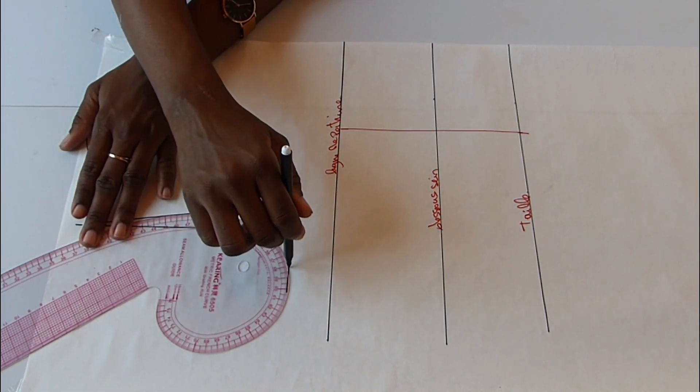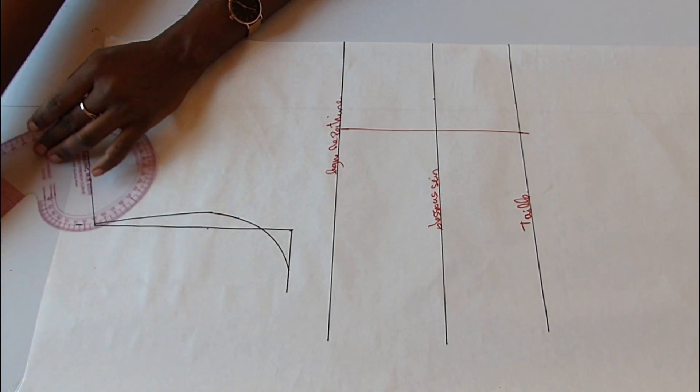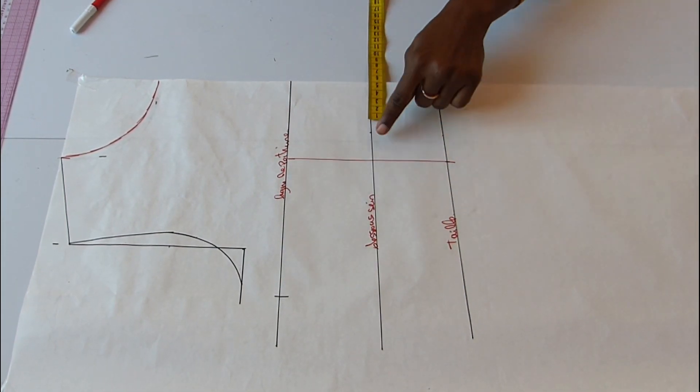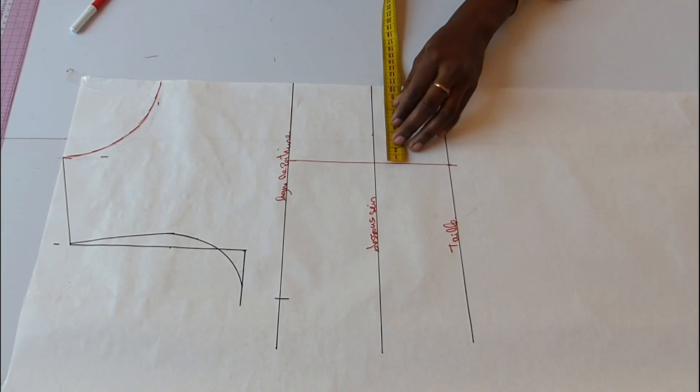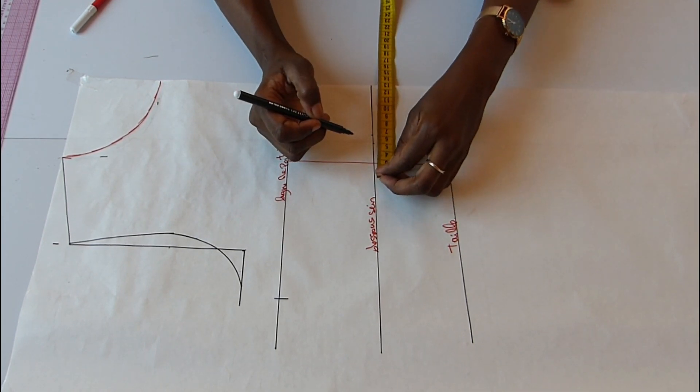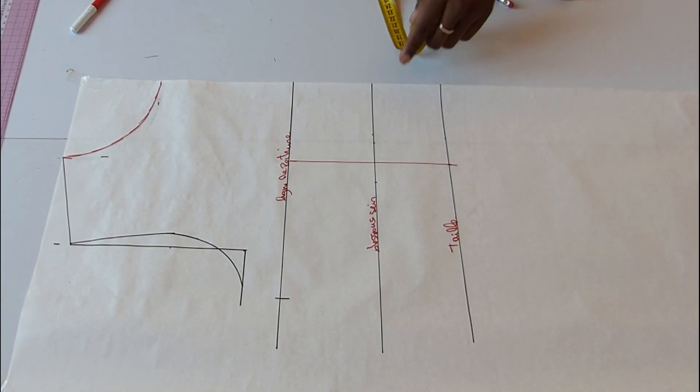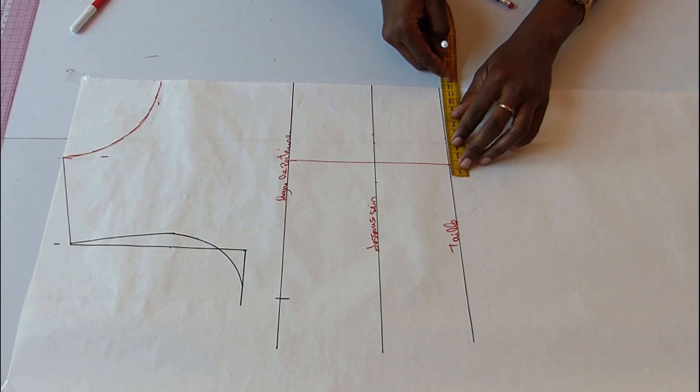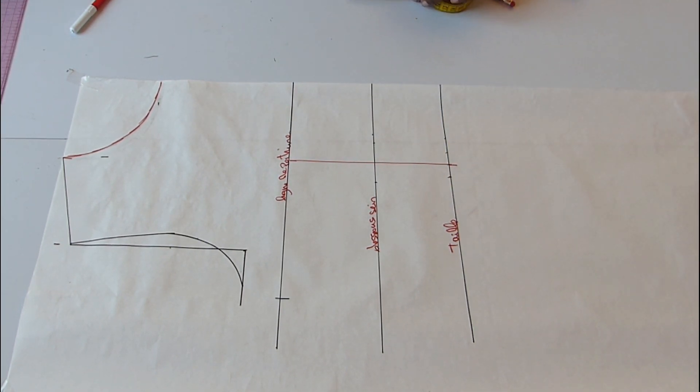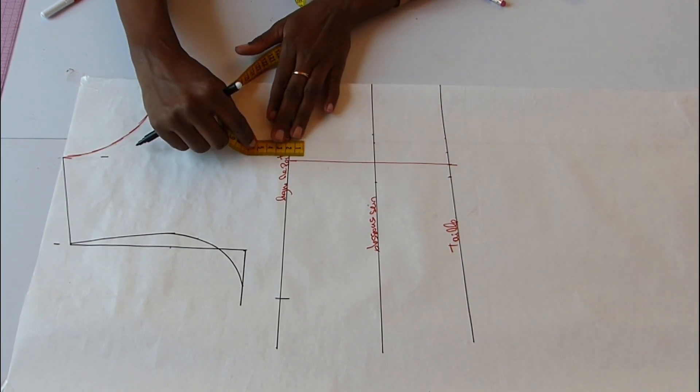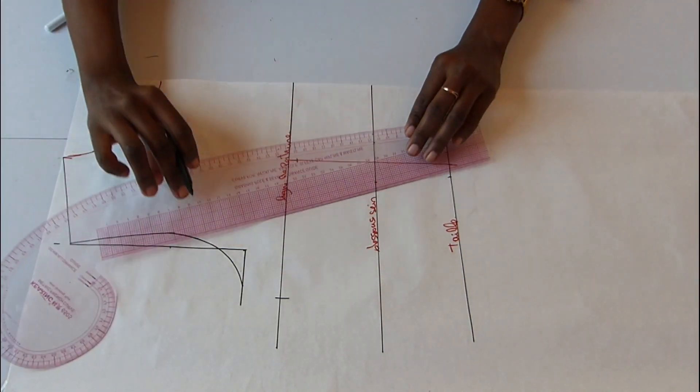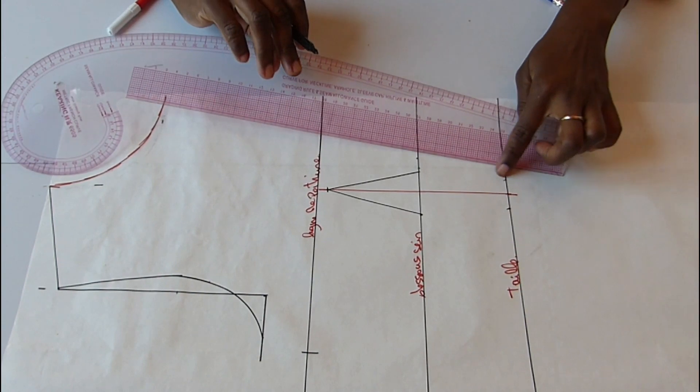Quand je vais finir de former mon amanchu, je vais venir pointer ma poitrine. Après ça, je vais former ma pince au niveau de mon dessous. L'écart de ma pince que je vais avoir ici ce sera une pince de 2,5 cm de chaque côté, ce qui va me faire 5 cm au niveau de la pince. Pour former ma pince, je vais décaler de 1 cm sur la longueur de ma poitrine pour éviter le côté qui pointe.